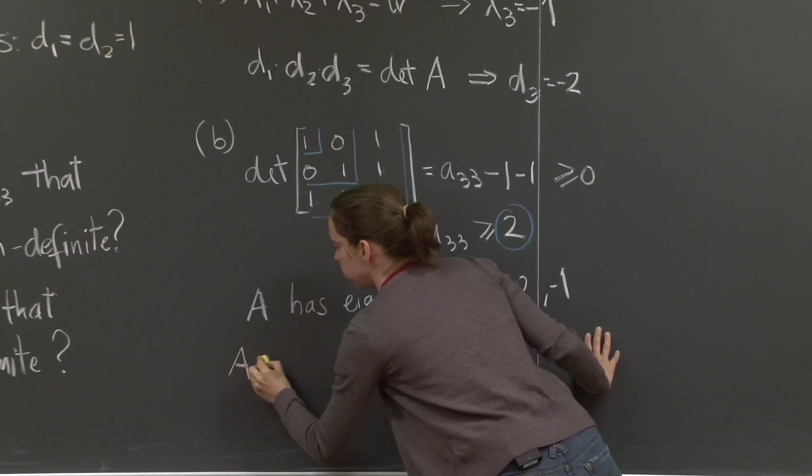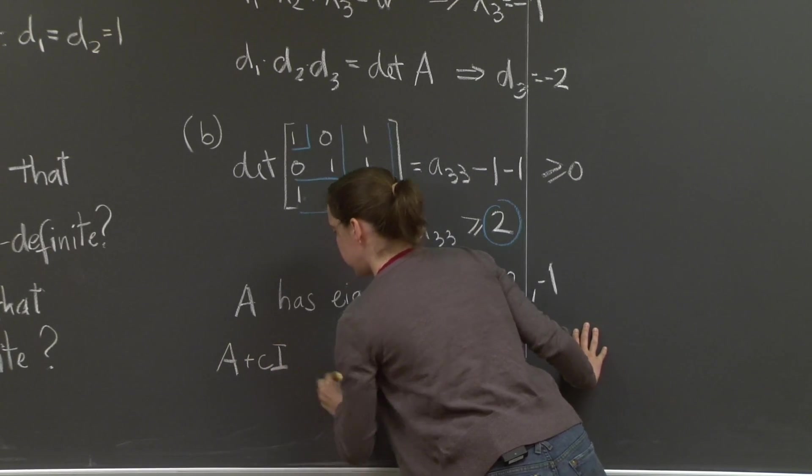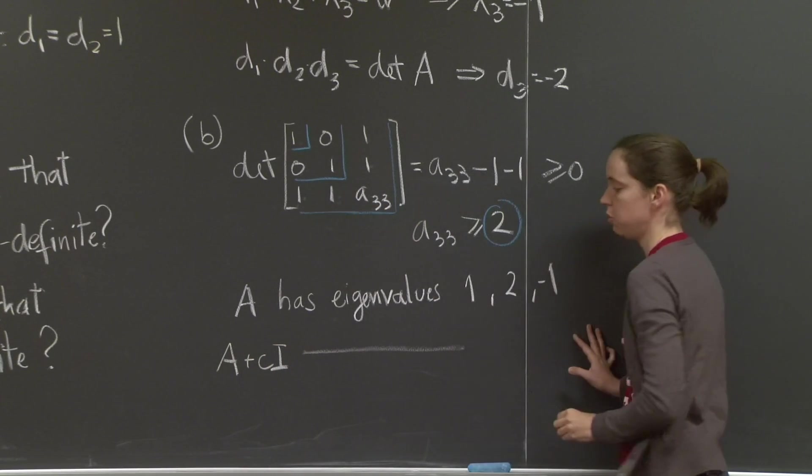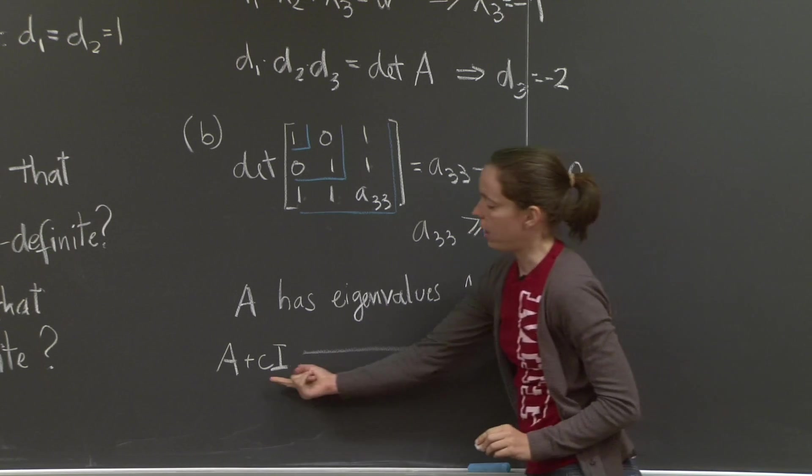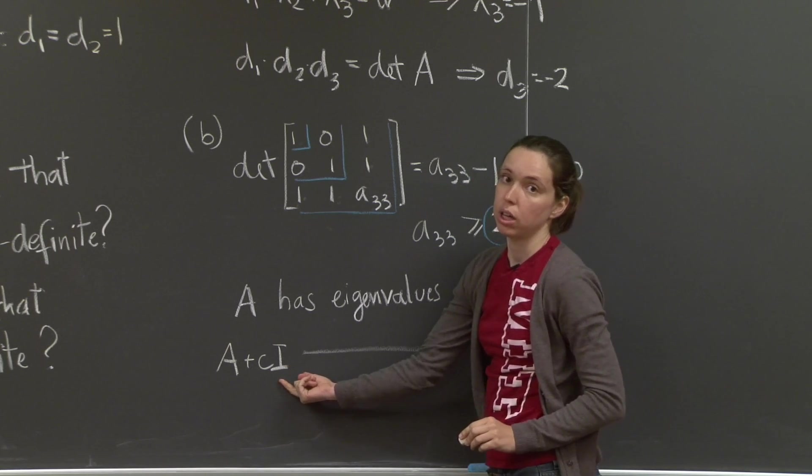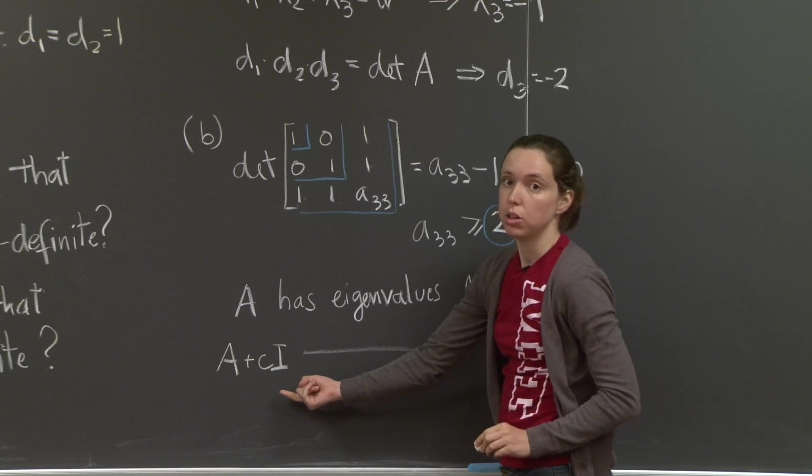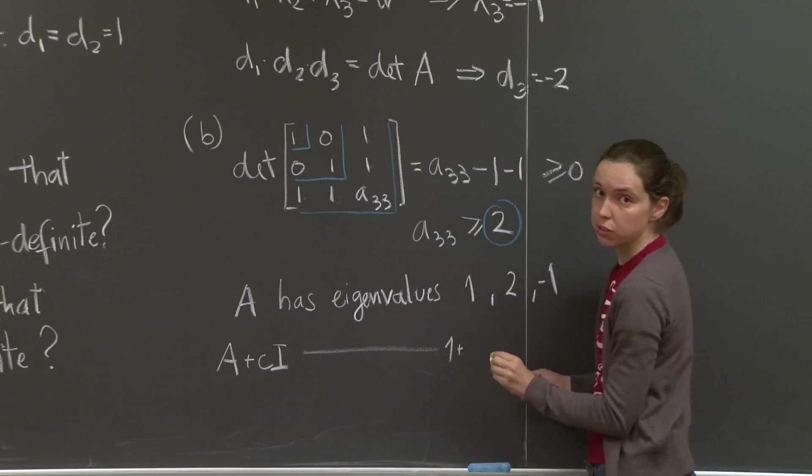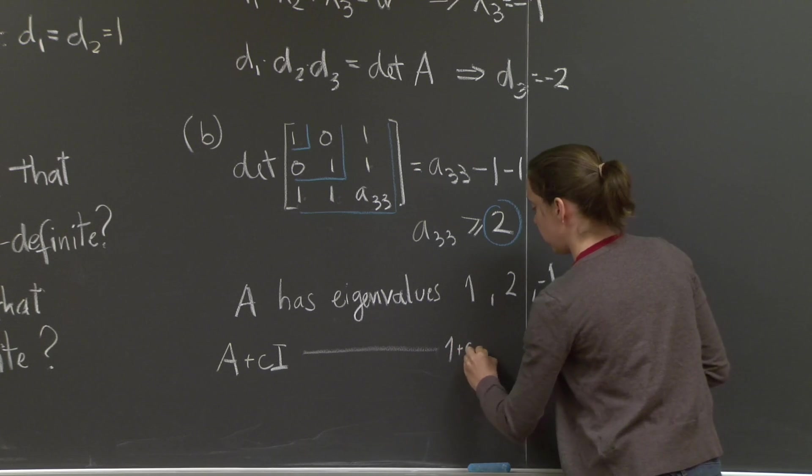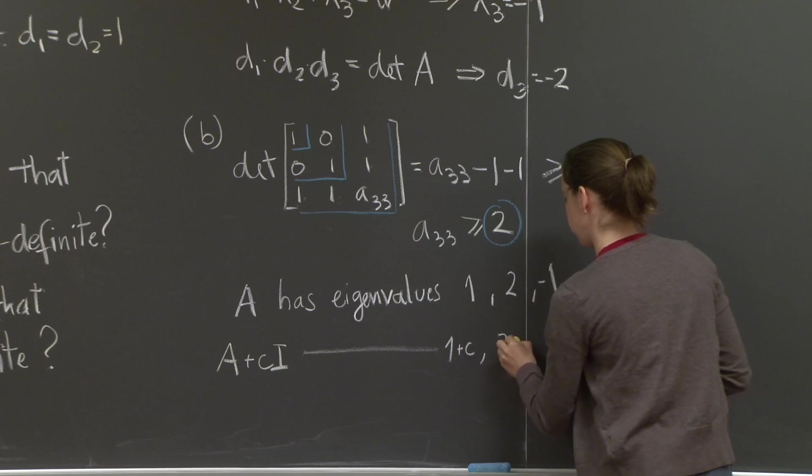So, A plus c I has eigenvalues. Well, you're just adding c I to the matrix. And in this particular case, you should know by now that that keeps the eigenvectors the same and adds the number c to each of the eigenvalues.